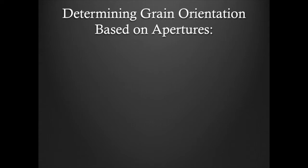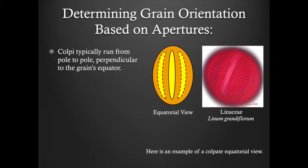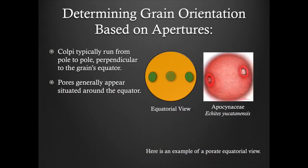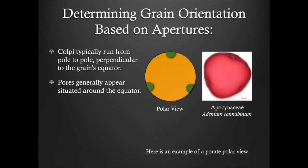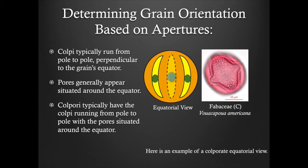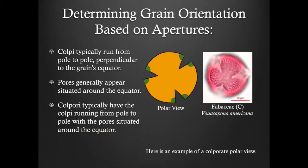Determining grain orientation based on apertures. The location of an aperture on a pollen grain can be very helpful when trying to determine a grain's orientation. The equatorial orientation usually provides a direct view of the aperture. When viewed in the equatorial orientation, colpi typically run from pole to pole perpendicular to the grain's equator. The ends of the colpi can be easily viewed from the polar orientation. Pores generally appear situated around the equator when viewed in the equatorial orientation. When observed in the polar orientation, you may not be able to determine the pore shape, but you can at least detect the presence of one or more pores on the grain. Colporate grains appear as a combination of the two aperture types, with the colpi typically running from pole to pole with the pore situated around the equator.